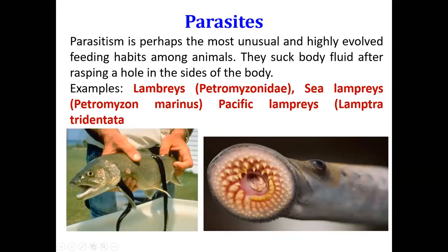The fifth feeding type is parasitism — the most unusual type of feeding habit, but it is also present in fishes. Some primitive fishes like lampreys are actual parasites. Just look at the structure of their mouth — the oral region has pointed conical structures with which they attach to the body surface of large fishes and suck their body fluids, directly taking nutrients from the host. So these are the five different types of feeding behaviors which exist in fishes.